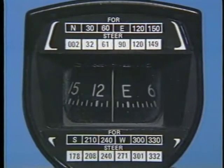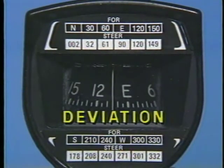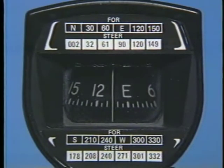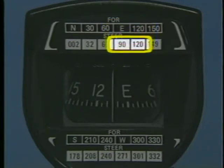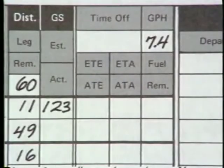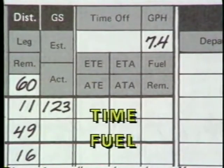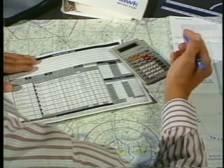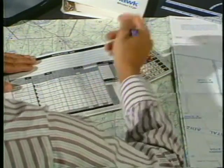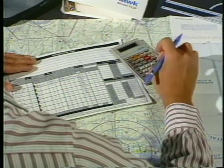Now adjust the magnetic heading for deviation by compensating for instrument and installation errors in the magnetic compass. The deviation card tells you what heading to steer for a particular magnetic heading. The magnetic heading of 105 degrees falls between east and 120 degrees — since neither heading requires a correction, the compass heading will be the same as the magnetic heading. As a final step in route planning, compute the time and fuel requirements for the flight, including estimated time en route between checkpoints and the total estimated time for the complete trip.